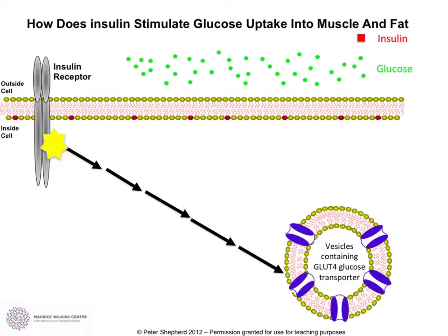We're going to run through this process one more time, looking at the diagrams in a slightly different way. At the start, this is a muscle cell or a fat cell — outside the cell above, inside below. Glucose comes along, and even if glucose is at a high concentration with a concentration gradient from high outside to low inside, the muscle cell or fat cell is not able to take up that glucose unless insulin is present. Here we have an insulin receptor over here, and down here is the vesicle containing the GLUT4 transporter in its membrane — the transporter required to be expressed on the cell surface to take up that glucose.